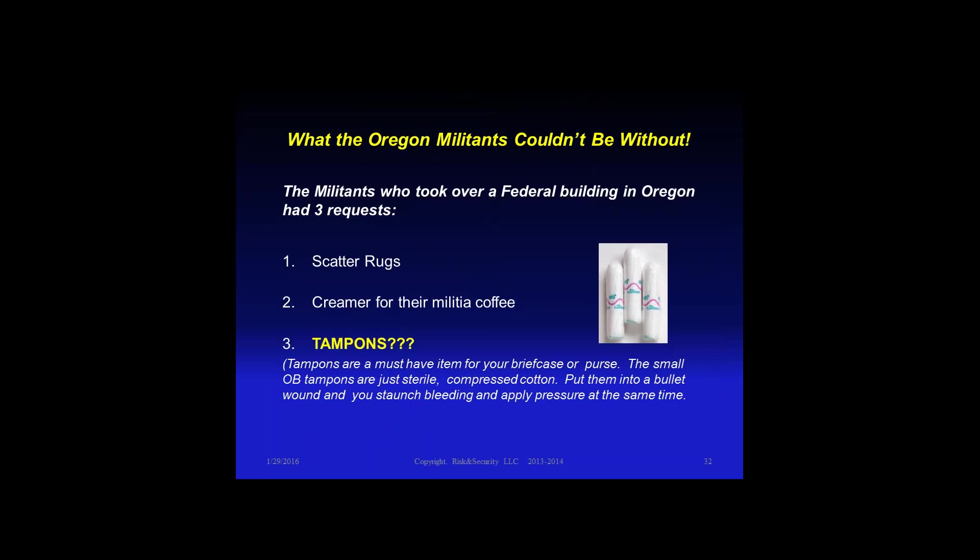Here's a trick question: what could the Oregon militant group not live without? They had three requests — scatter rugs because their feet were cold, creamer for their militia coffee, and tampons. So tampons can be your secret weapon. These little OB tampons from the store — don't think of them as a tampon, think of them as a sterile compressed piece of cotton. If somebody gets shot around you, you can use it to soak up blood and staunch the wound, and it applies pressure to stop the bleeding.